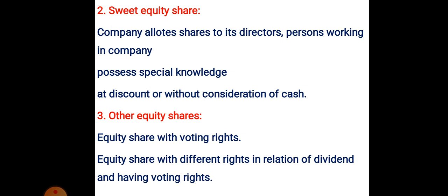The third type is other equity shares, which are of two types: equity shares with special voting rights, and equity shares with different rights in relation to dividend and having voting rights too. In the first type, for one equity share, they may get two votes — a special voting right. In the second type, equity shares are issued with double voting rights and also with a fixed rate of return up to some extent.